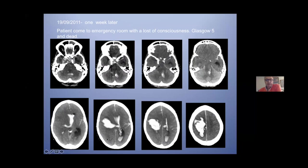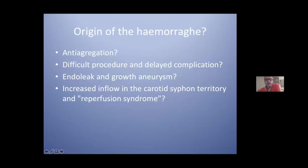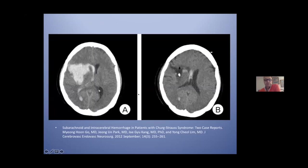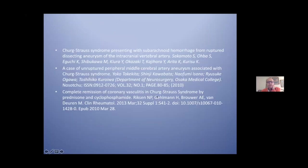This bleeding is at a distance — proximal to the aneurysm — in the oval center. What is the origin of this bleeding? Anti-aggregation? No, because the patient was treated with anti-aggregation two years before. Difficult procedure, manipulation, possible endoleak, inflation, or increase in flow — reperfusion syndrome. Some papers from Japanese doctors present the same bleeding in patients with Churg-Strauss syndrome, and I think it is recommended to treat the patient with steroids in this case.